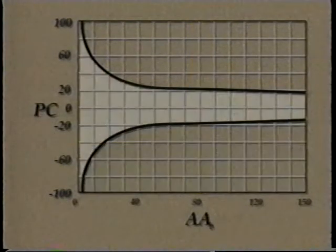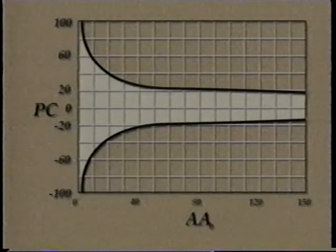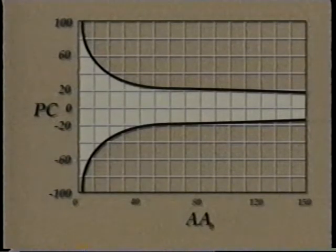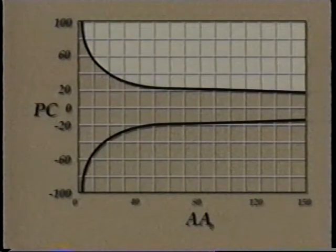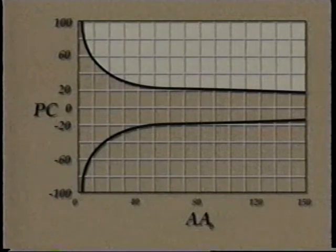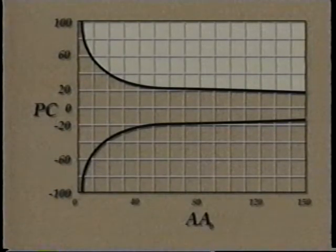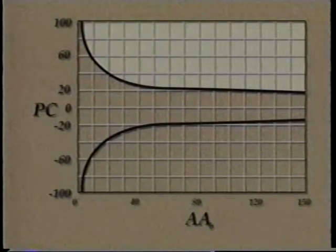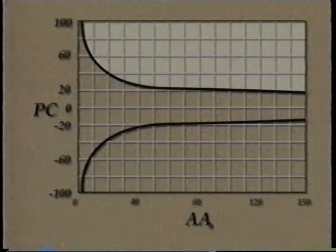If PC had fallen between the two curves, that would mean the change was probably due to chance and not to the safety improvement. If it had fallen above the upper curve, the situation was probably made worse by the safety improvement. The significance test is good for fatal, injury, and property damage accidents as well.